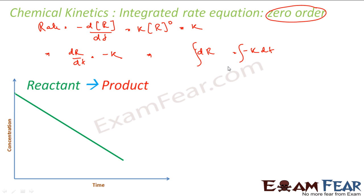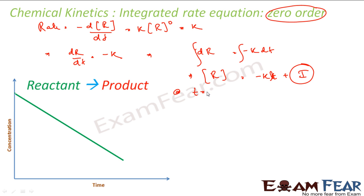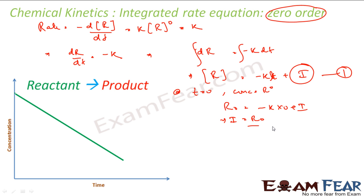Or I can say d[R] = minus k·dt. Integrating both sides: the integration of d[R] gives R, minus k·dt gives minus kT, and one integration constant I. To find the value of I, at t = 0 the concentration is R₀. Putting that value: R₀ = minus k × 0 + I, so I = R₀, the initial concentration.